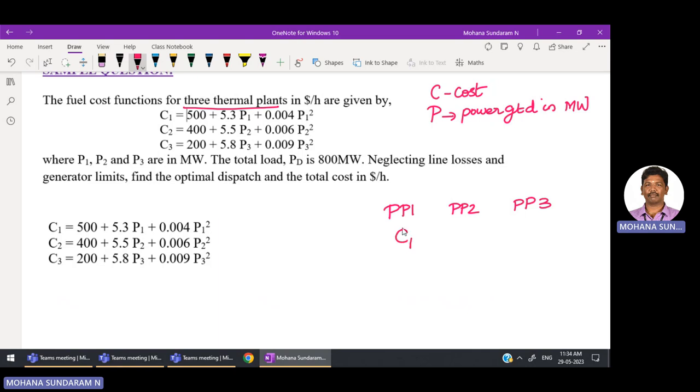C1 is the cost involved in operating power plant one. C2 is the cost for power plant two. C3 is the cost for power plant three. P1 is the total real power generated in power plant one, P2 in power plant two, and P3 in power plant three.